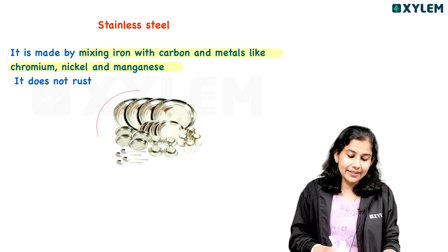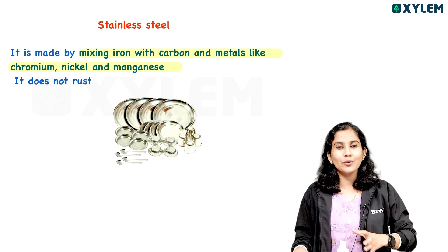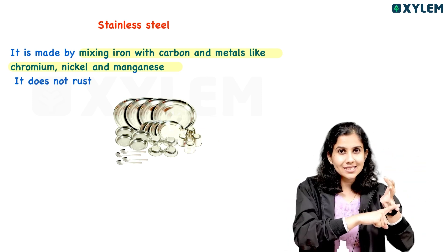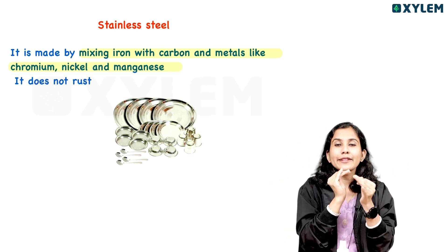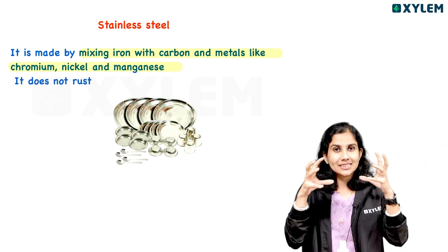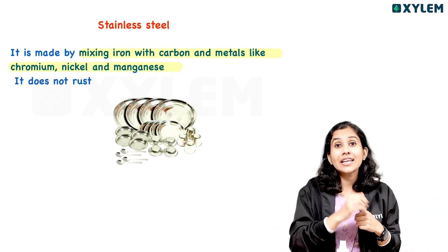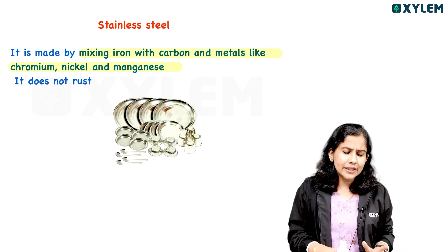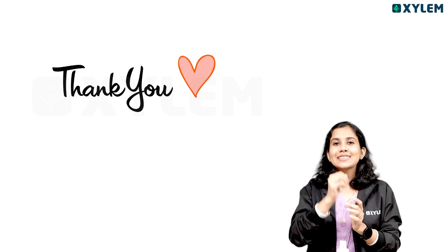To summarize, rusting is a chemical change and a chemical process involving chemical reactions. Iron reacts to form rust — a new substance called Iron Oxide. It is important to prevent rusting using methods like painting, galvanization, and stainless steel. Thank you so much. Bye.